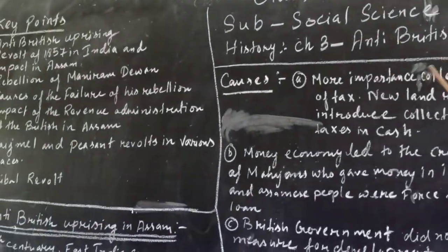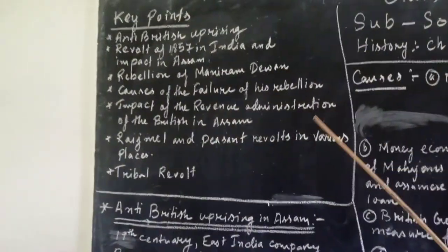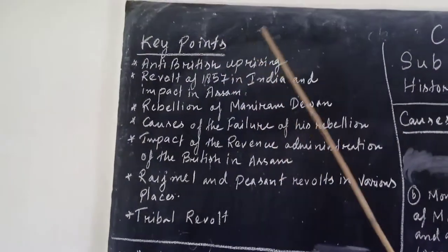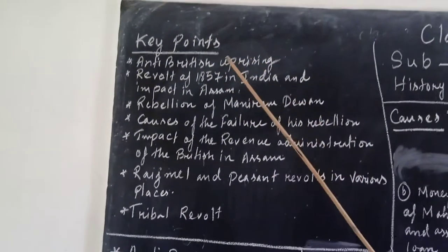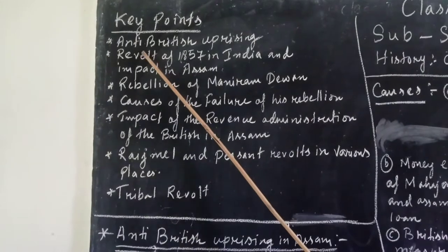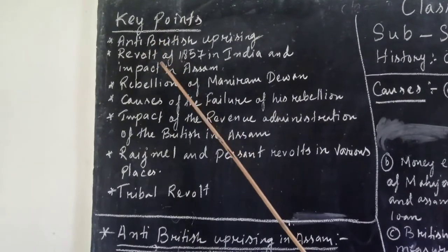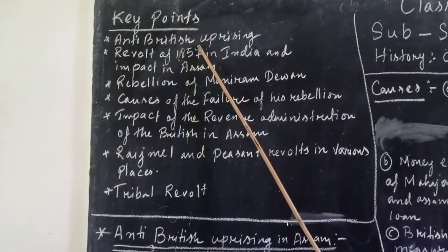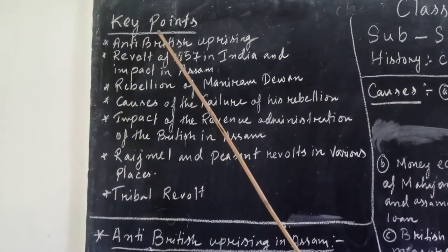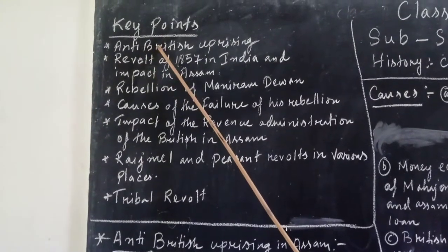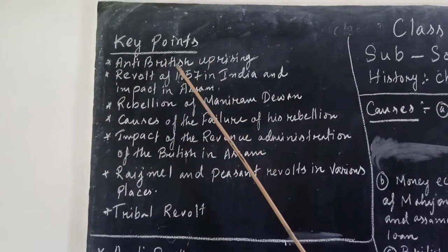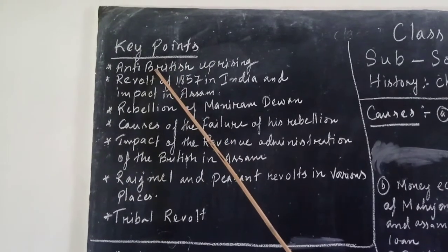Before going to this chapter, let us go to the key points of the lesson. The first key point is anti-British uprising — what were the reasons? We have to look first at what were the reasons behind why people of Assam rose up against British rule.